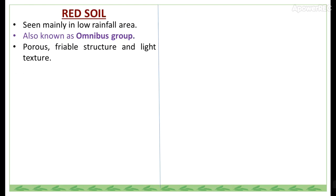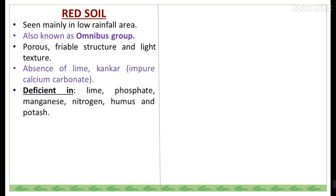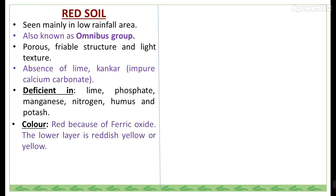Red soil is seen mainly in low rainfall areas and is also known as the omnibus group. It has a porous, friable structure and is light textured. It has an absence of lime kankar, that is, impure calcium carbonate. Red soil is deficient in lime, phosphate, manganese, nitrogen, humus and potash. The color is red due to ferric oxide, and the lower layer is reddish yellow or yellow.